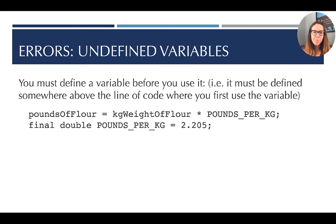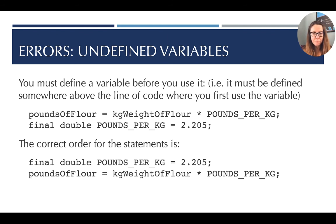Here's an example where we have poundsOfFlour equals kilogramWeightOfFlour times poundsPerKilogram. And then on the next line we see that we set poundsPerKilogram, we declare it as a constant, and we initialize it. This will cause an error because what we're doing is we're using a variable before we've defined it. And so you must define a variable before use, which means somewhere above the line of code where you first use that variable, you better have already declared it. The correct order for the statement is to declare and initialize poundsPerKilogram first, and then later we can make use of it freely.